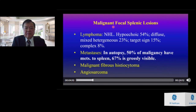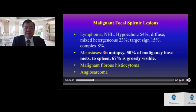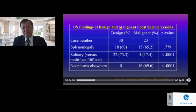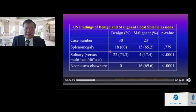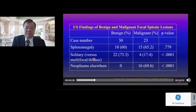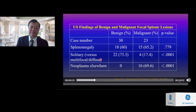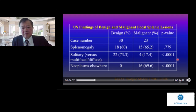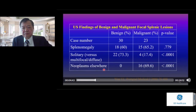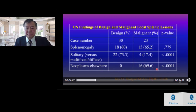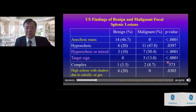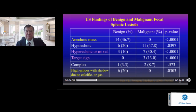The most common malignant focal splenic lesions are due to lymphoma and metastasis. When comparing solitary versus multifocal diffuse lesions, a solitary lesion is statistically much more likely to be benign. When there are neoplasms elsewhere in the abdomen, focal splenic lesions are more likely to be malignant with statistical significance.